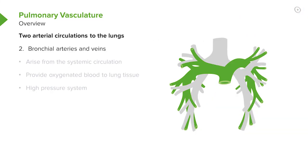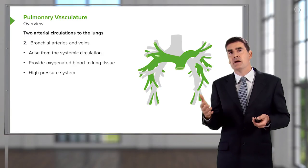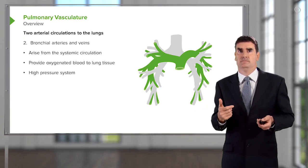Then there's the bronchial artery circulation. That's a systemic circulation that arises from the normal left-sided cardiac circulation and provides oxygenated blood to the lung tissue. And because it comes from the left ventricle circulation, it's a high pressure system.